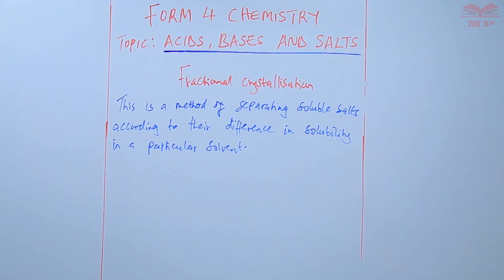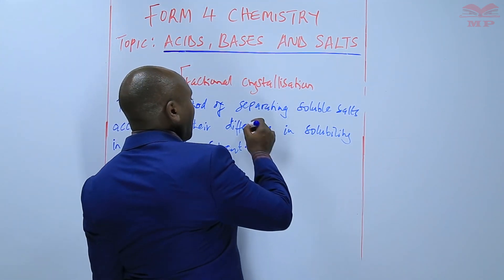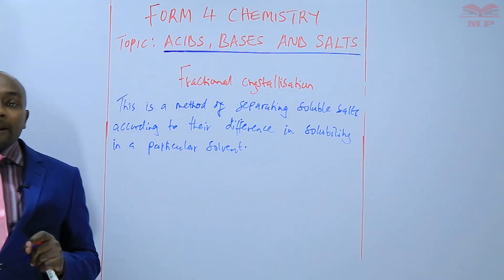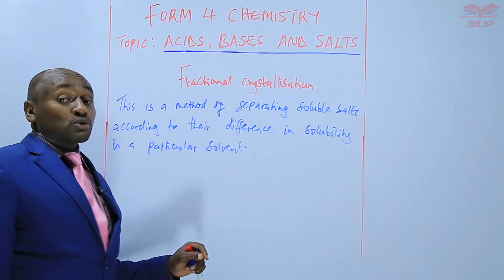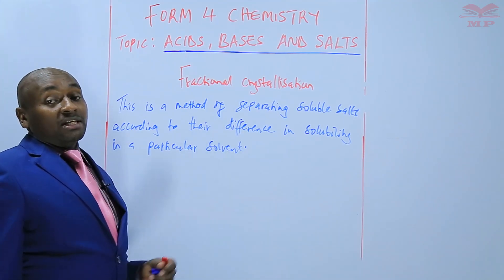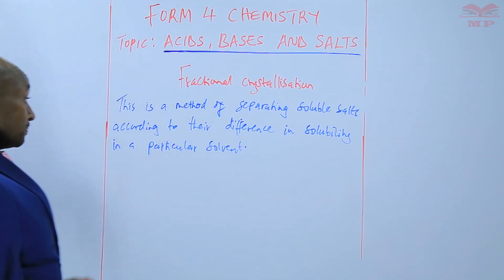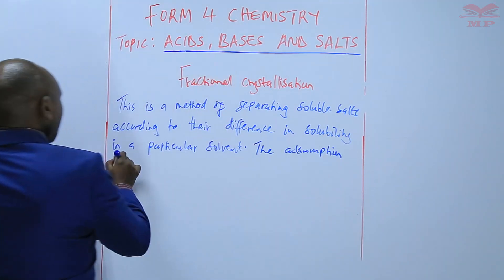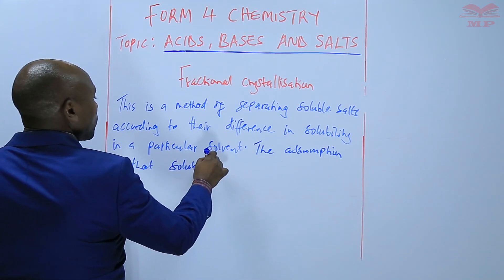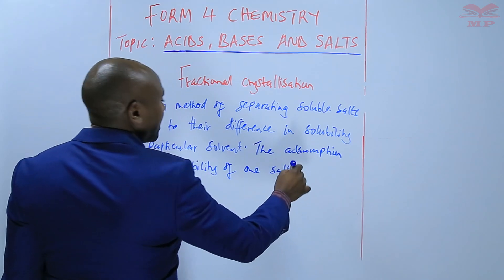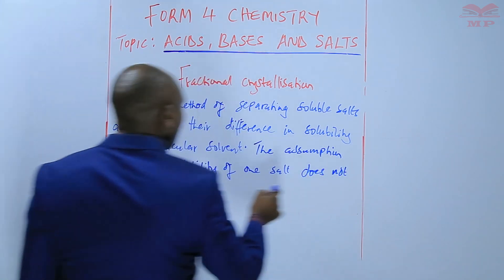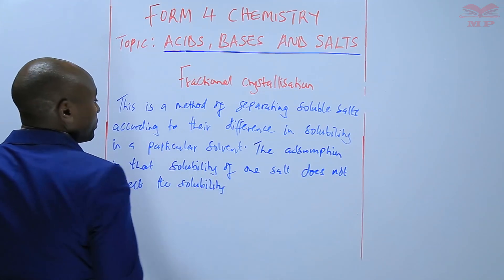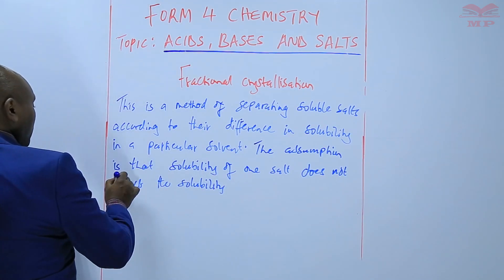So we have salt X and salt Y dissolved in water, but both have different solubilities. We can separate them using fractional crystallization. In this method, the assumption is that the solubility of one salt does not affect the solubility of the other.